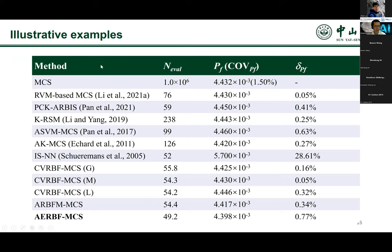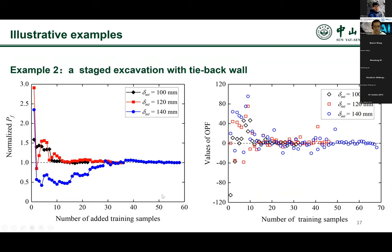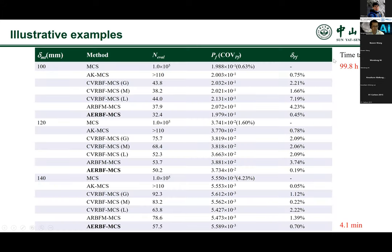The second example is a staged excavation with a retaining wall. In this example, we care about the maximum lateral wall deflection, and we have five uncertain parameters. We use the model to predict the failure probability, needing only about 50 evaluations of the performance function to reach the result estimated by Monte Carlo simulation. If Monte Carlo simulation takes about 100 hours to calculate the failure probability, with this model we only need four minutes.